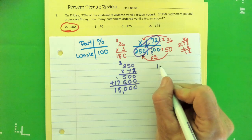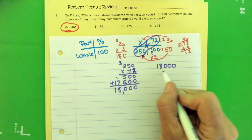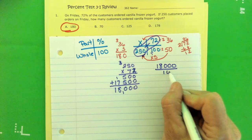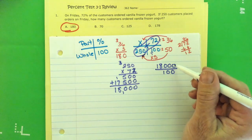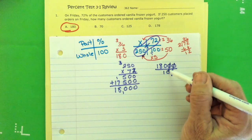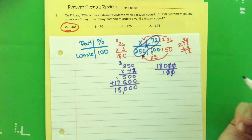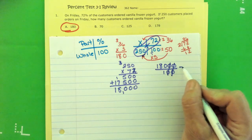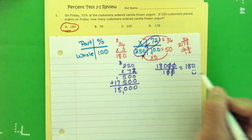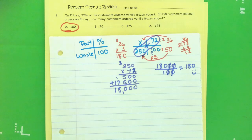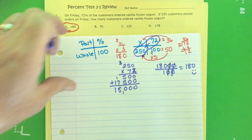18,000 divided by 100. I can cancel out my extra zeros here and here. And I get 180 divided by one, which equals 180. So whichever way you prefer, there you go. Let's move on to number two.